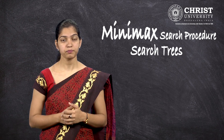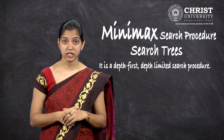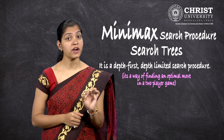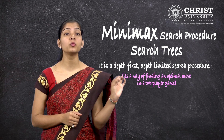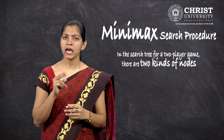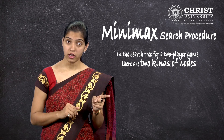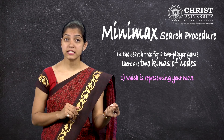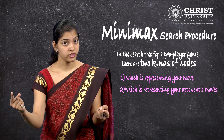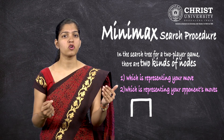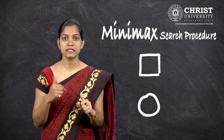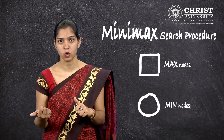Before explaining the algorithm, a brief introduction to search trees is required. It is a depth-first, depth-limited search procedure — a way of finding an optimal move in a two-player game. In the search tree for a two-player game there are two kinds of nodes: one representing your moves and another representing your opponent's moves. These nodes are generally drawn as squares and circles respectively — a square is the max node and a circle is the min node.